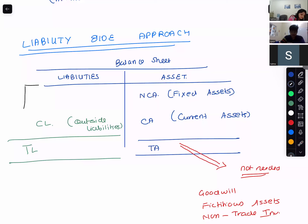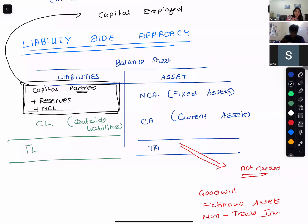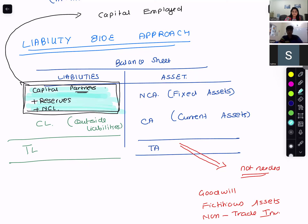For the liability side approach, you start from the liability side. The capital employed box will contain: your capital — that means partner's capital — plus your reserves, plus your outsider's long-term liabilities. So from the liability side approach, capital employed equals capital of partners plus reserves plus long-term non-current liabilities.